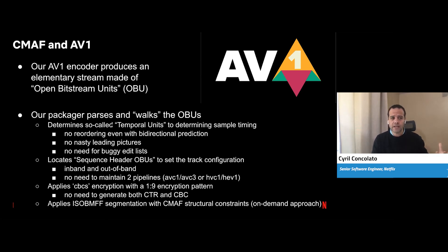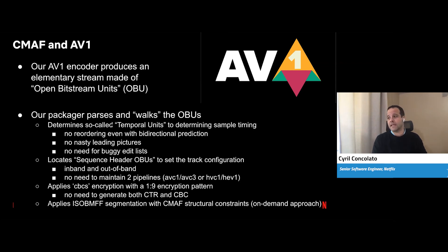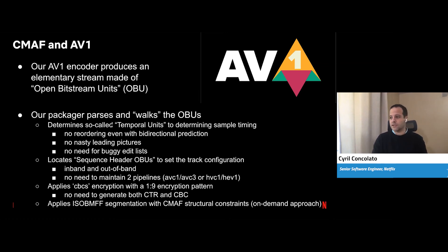For other codecs you have to maintain two pipelines — an out-of-band pipeline and an in-band pipeline. For AV1, there's just one pipeline, one simplification. Same thing for encryption: AV1 recommends encryption using CBCS with a 1:1 encryption pattern, so you don't need to maintain two encryption pipelines. No dichotomy between CTR and CBC — just one.